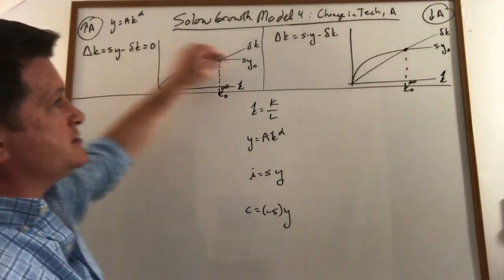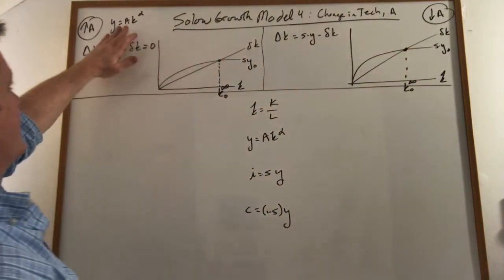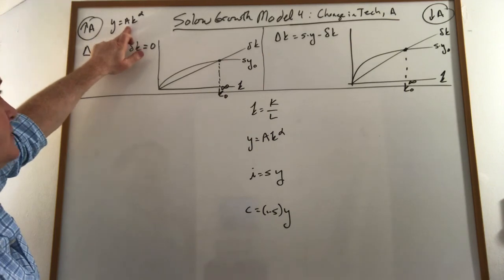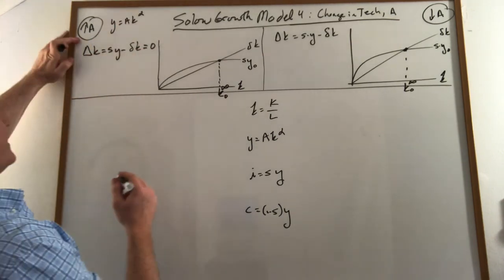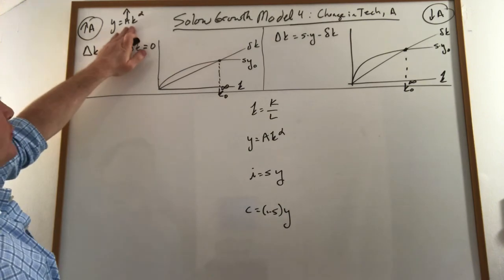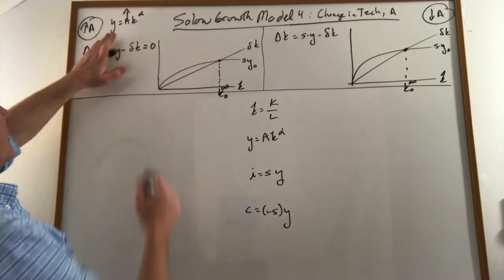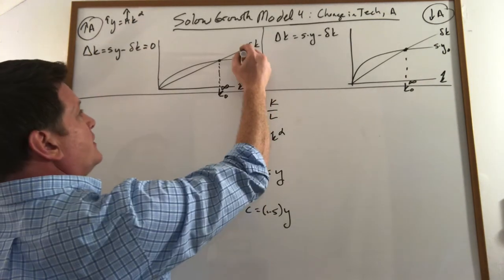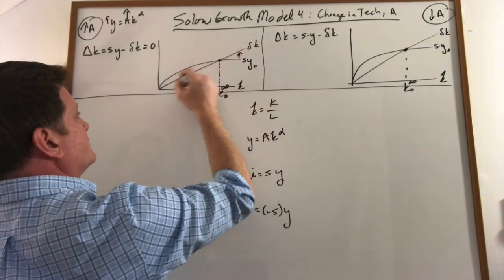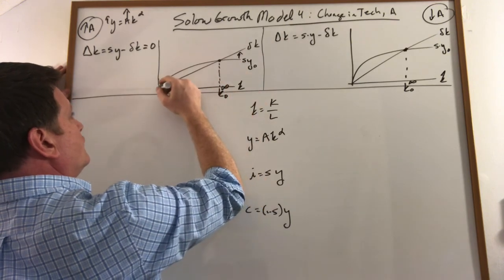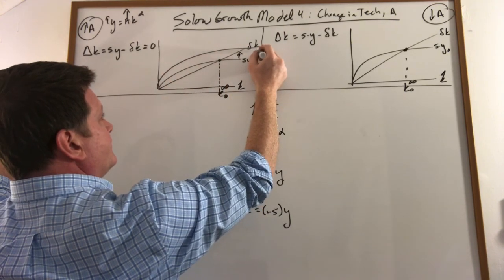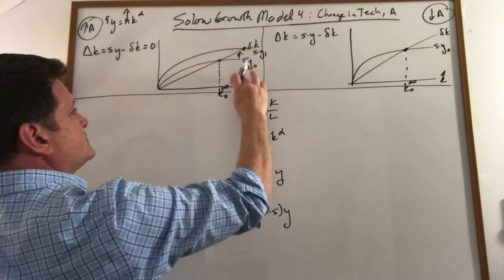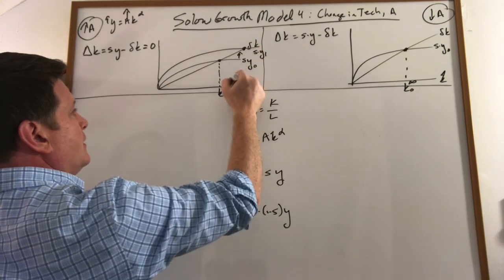The increase in technology—they're both going to happen through the production function. So when technology suddenly improves, this improves, output goes up given the same stock of capital. So immediately, the effect over here is to move this up to a line like that. That increases out to here.